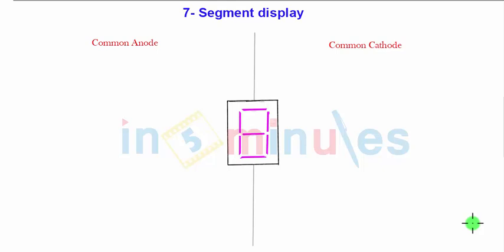Now you all know that the 7 segment display looks like this one which is drawn exactly at the center of the page and which can be operated into two modes: common anode mode or common cathode mode.